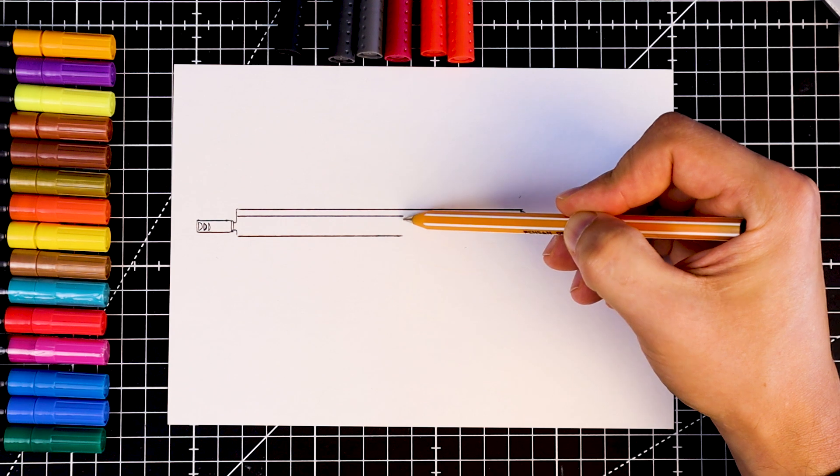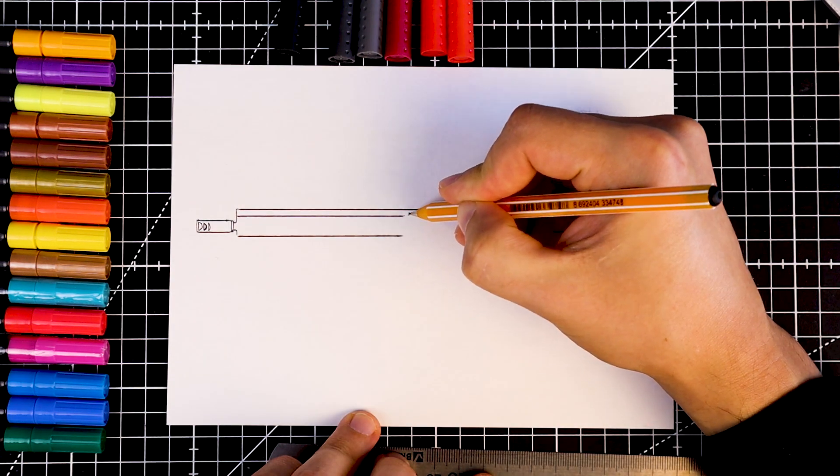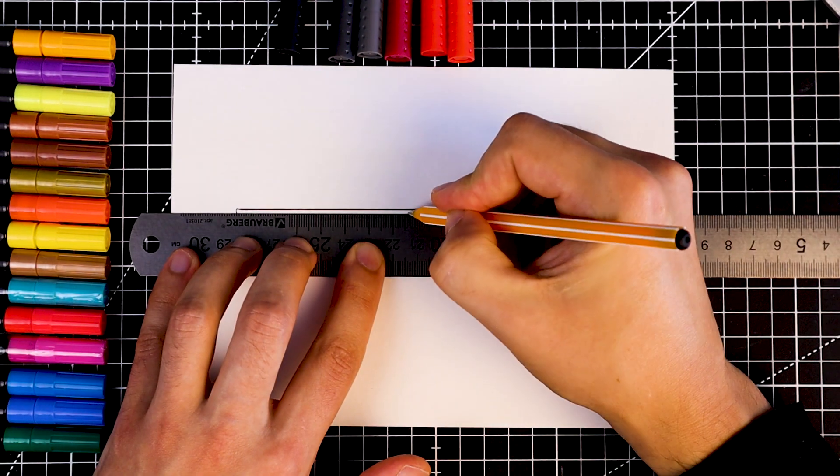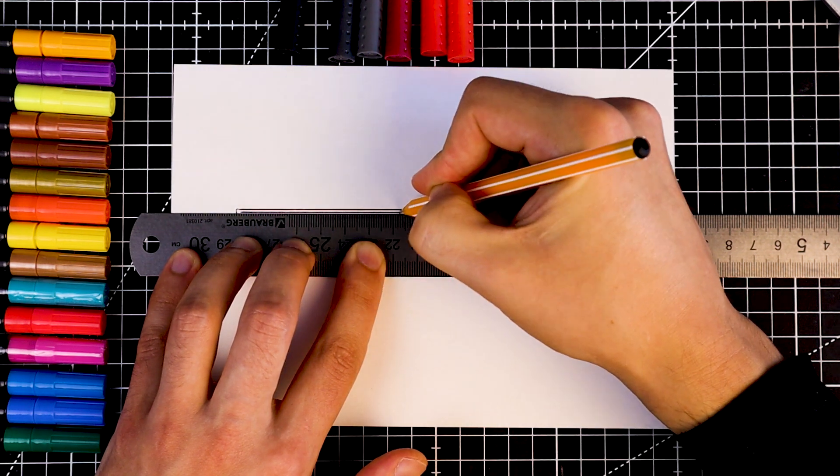This part of the rifle is called handguard. I want to color this top rail red later, so let's make it a bit thicker.